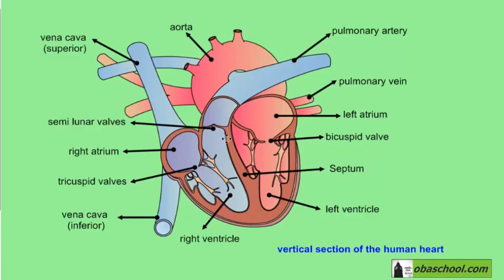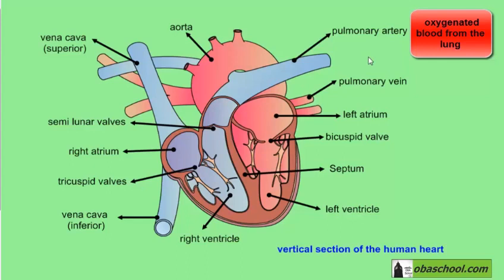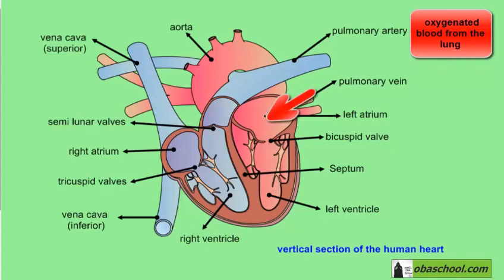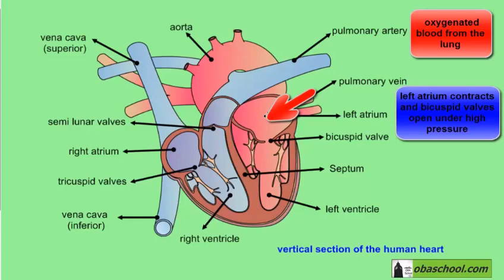This is how blood will move in the body. Let's start with oxygenated blood coming from the lungs — it is going to come to the heart through the pulmonary vein. The pulmonary vein takes this blood to the left atrium. The bicuspid valve is closed. When the left atrium is filled with blood, the muscles will contract, and this pressure will cause the bicuspid valve to open.